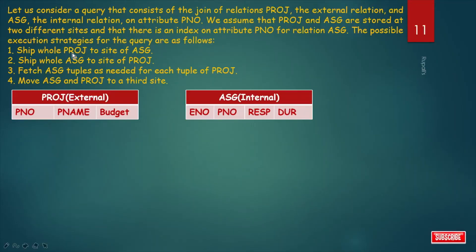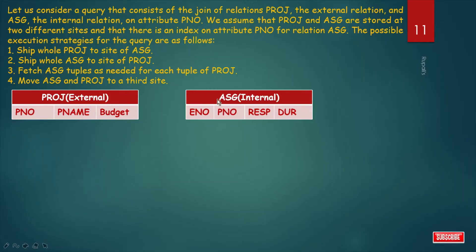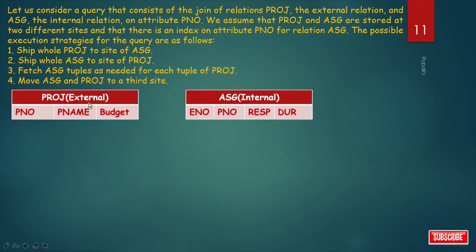Consider a real-life example: a query consisting of the join of relation PROJ (external relation) and ASC (internal relation) on attribute PNO. PROJ and ASC are stored at two different sites, and there is an index on attribute PNO for relation ASC. The four possible execution strategies are: (1) ship whole PROJ to the site of ASC, (2) ship whole ASC to the site of PROJ, (3) fetch ASC tuples as needed for each tuple of PROJ, (4) move ASC and PROJ to a third site.